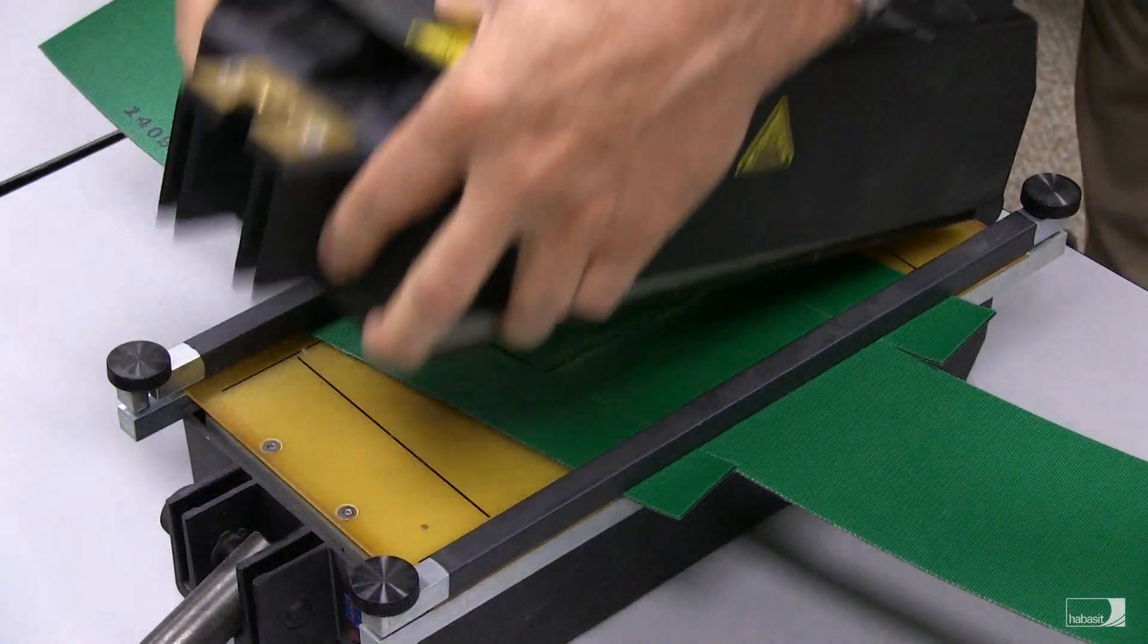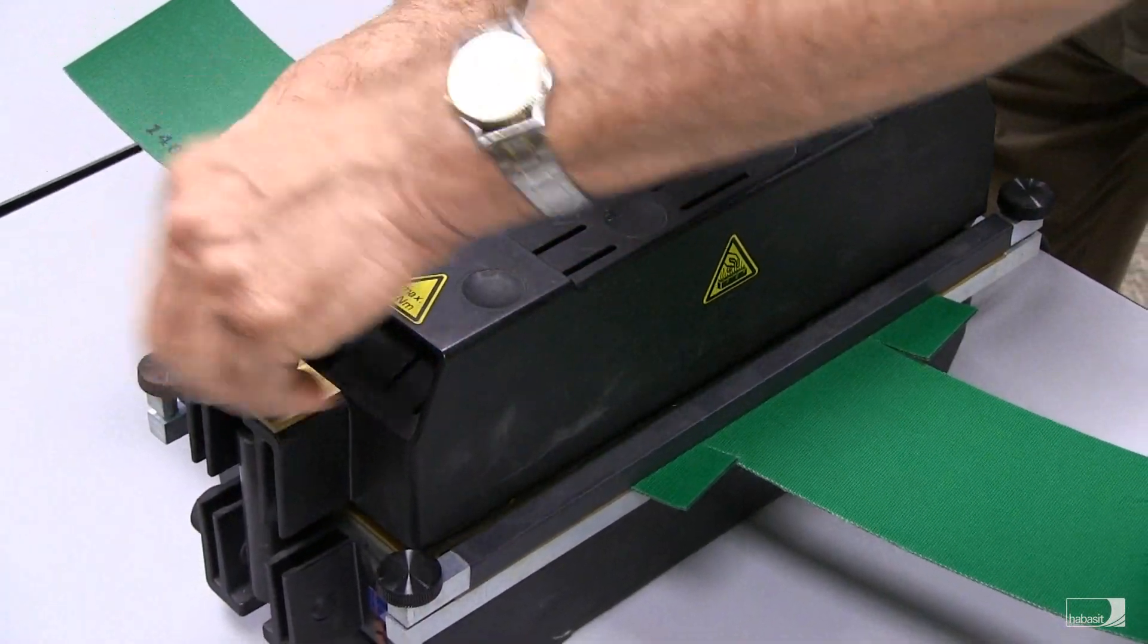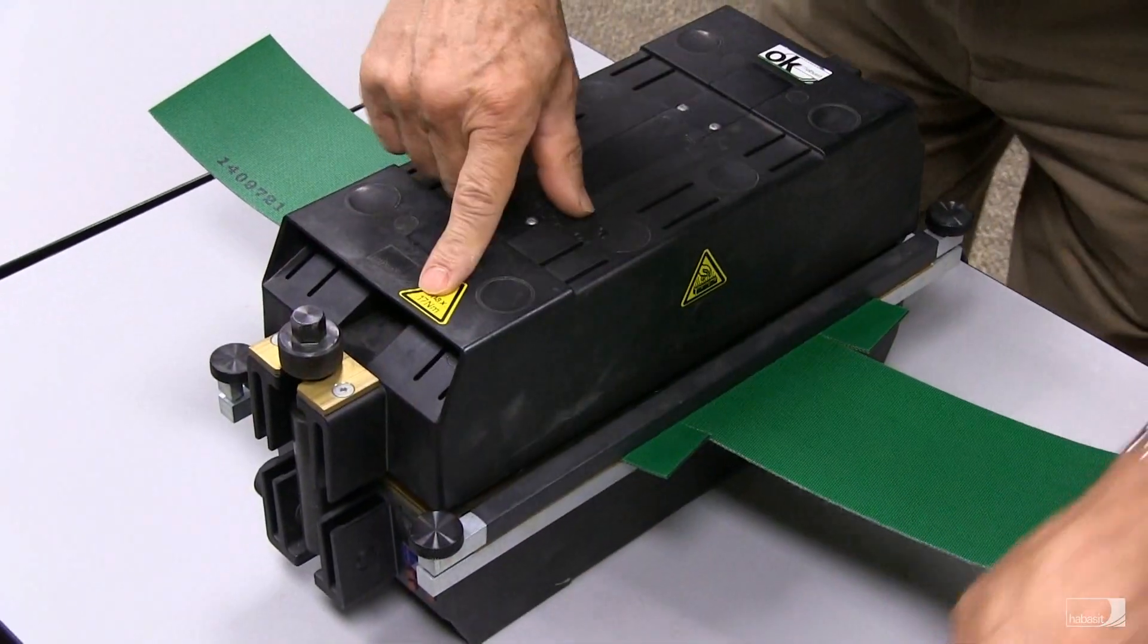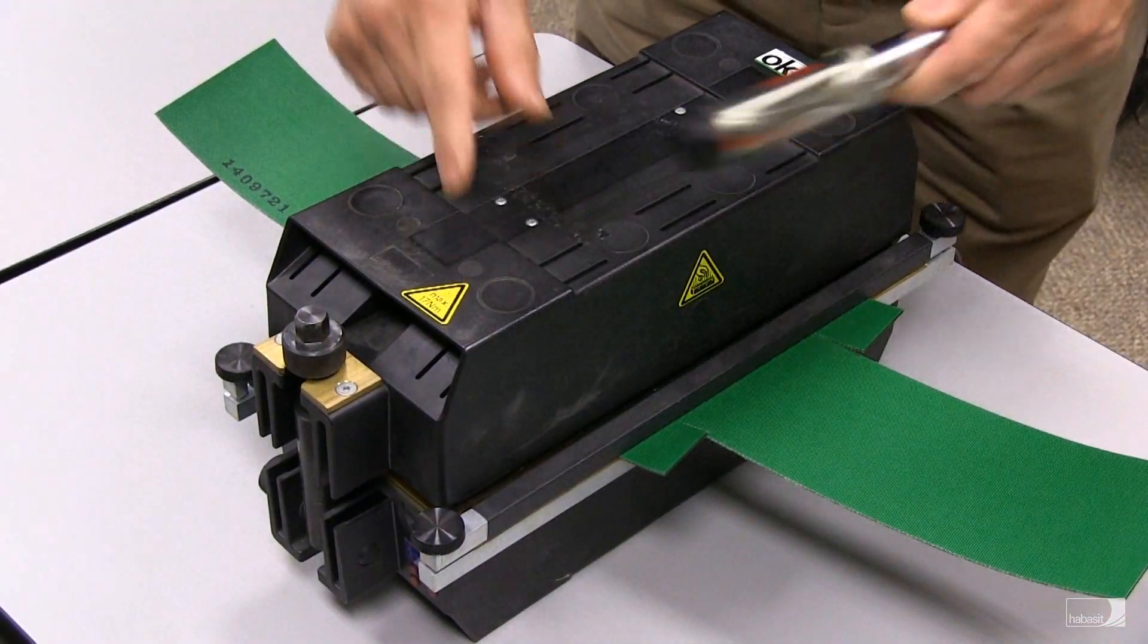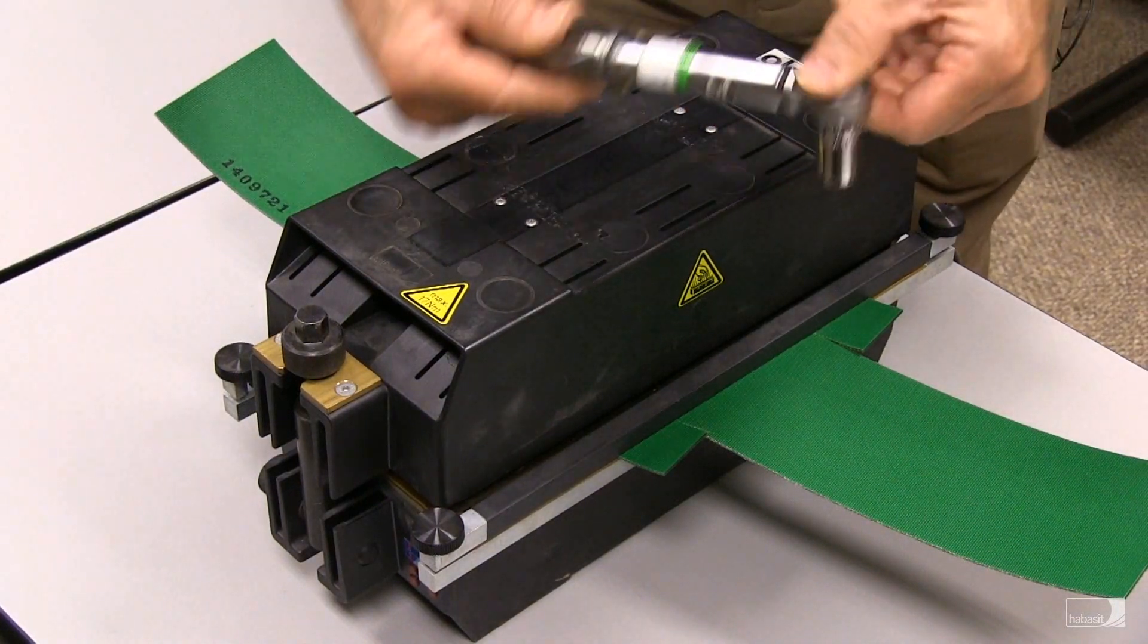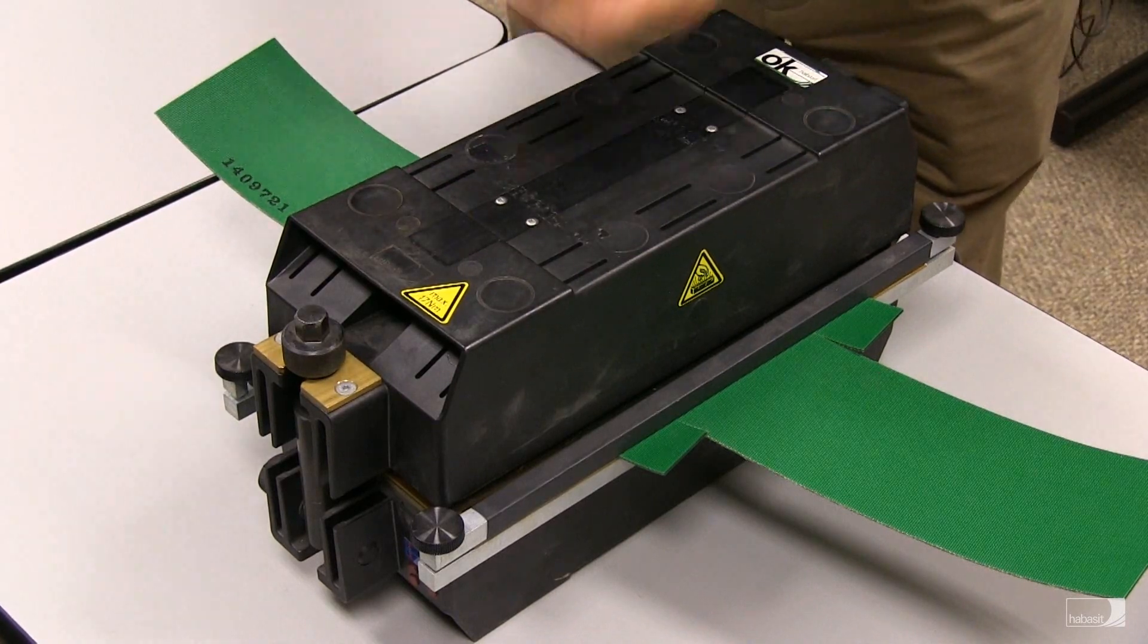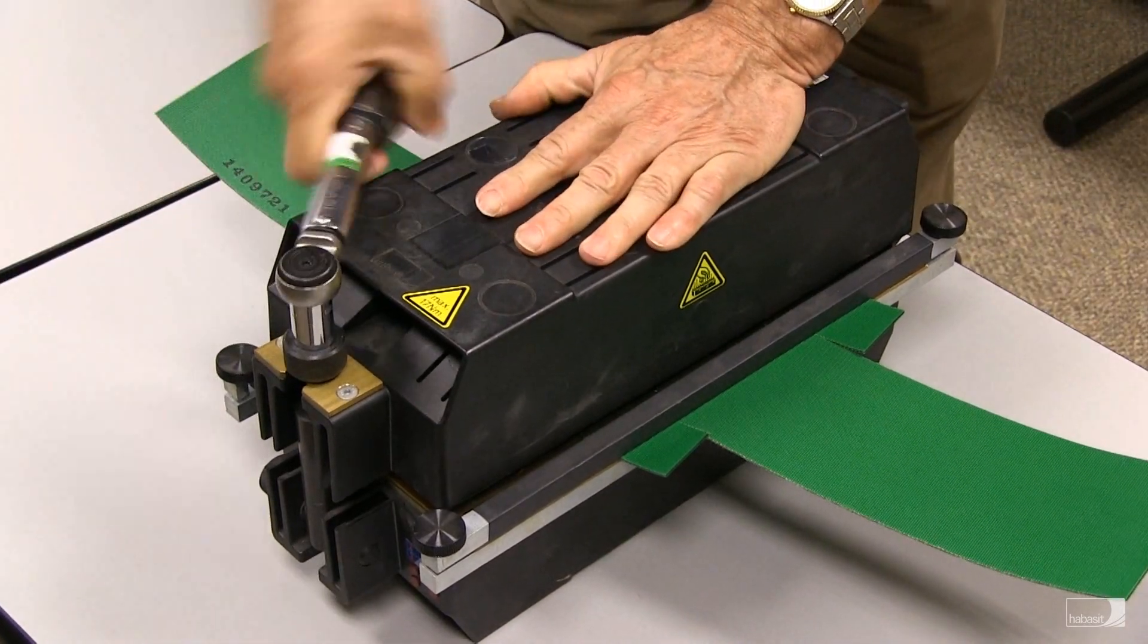Then we'll close the press. The PT-300 press instructions call for using a torque wrench to tighten the press, 17 newtons per millimeter maximum. So we have the torque wrench set to 17. And we just tighten it down until it clicks.